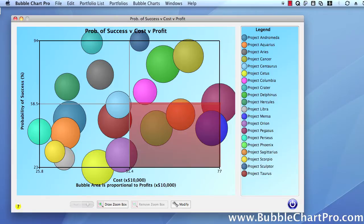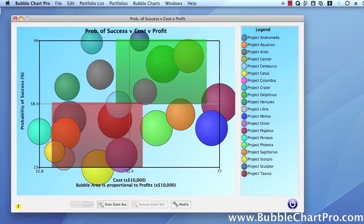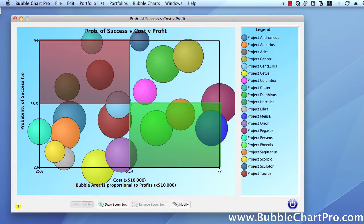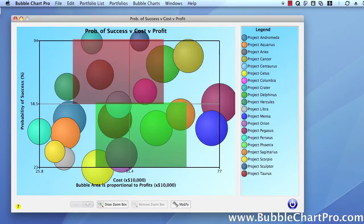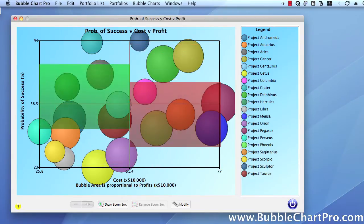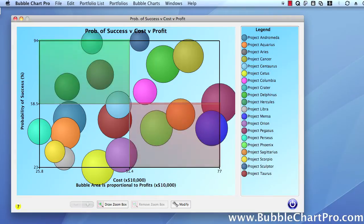Consequently, the least attractive projects are the projects with the smaller bubble in the lower right quadrant. These projects have relatively low profits and the highest cost with the lowest probabilities of success. It's important to remember when looking at a bubble chart that the quadrants show relative relationships between the different objects. Projects in less attractive quadrants are not necessarily bad per se, they just may be less attractive than the projects in the other quadrants.